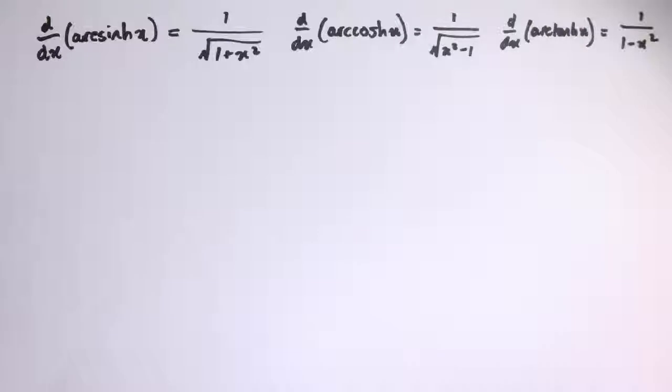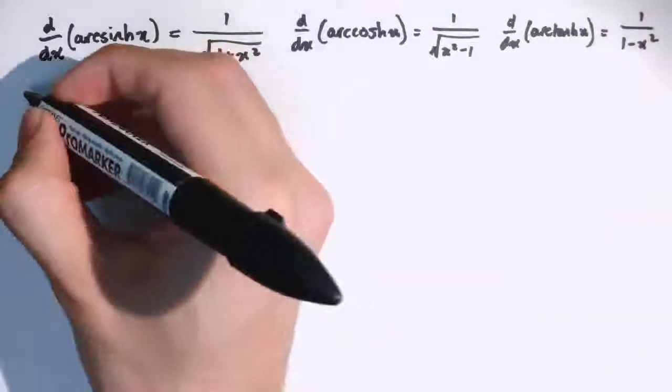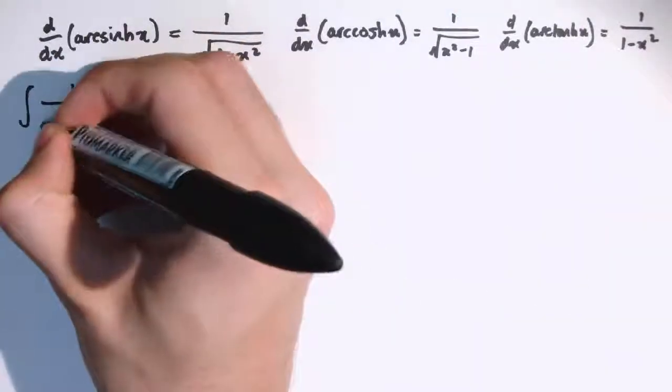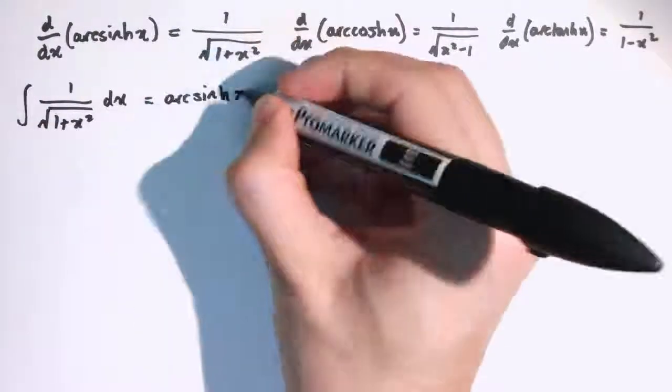This immediately gives us three integrals, so we can say the integral of 1 divided by the square root of 1 plus x squared dx is arc shine of x plus c.